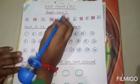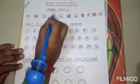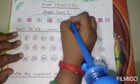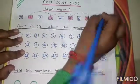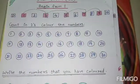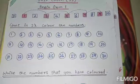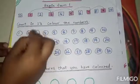Begin from 1. First box skip and second box jump. First box skip and second box jump.